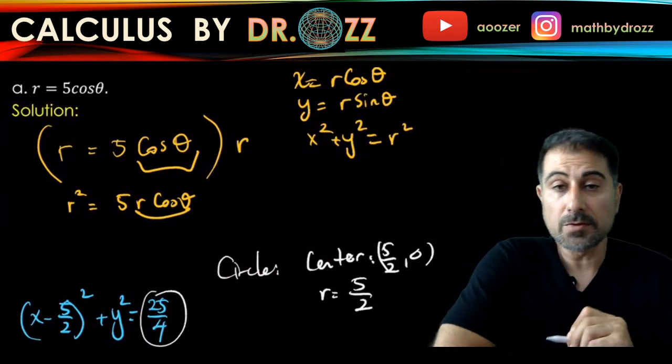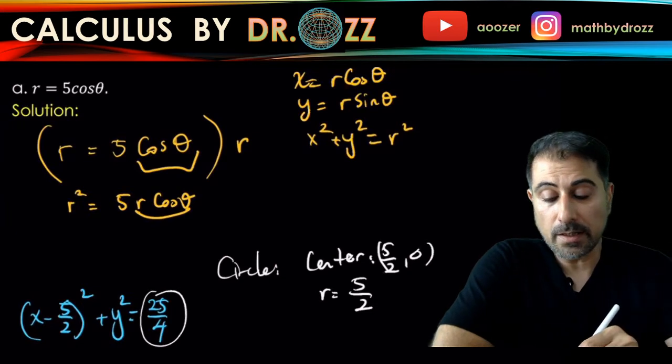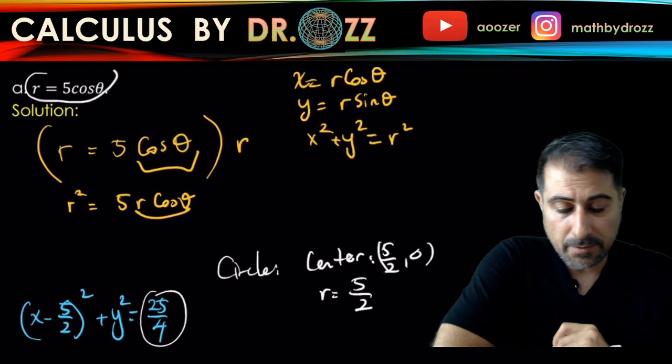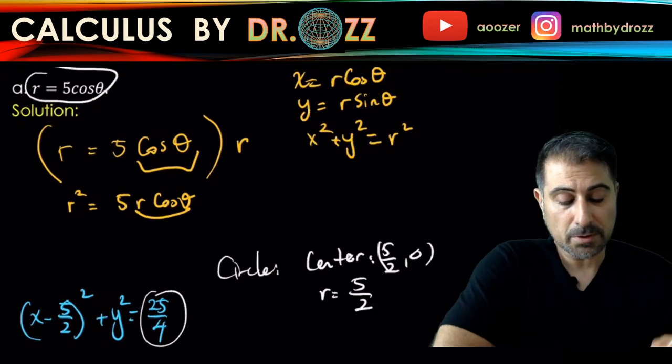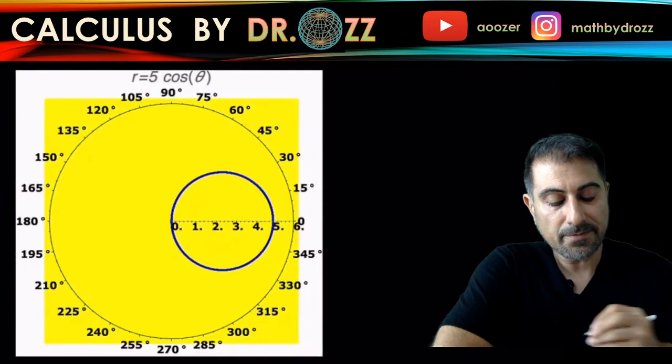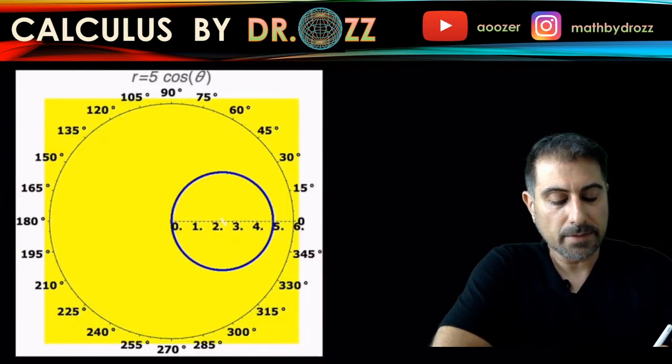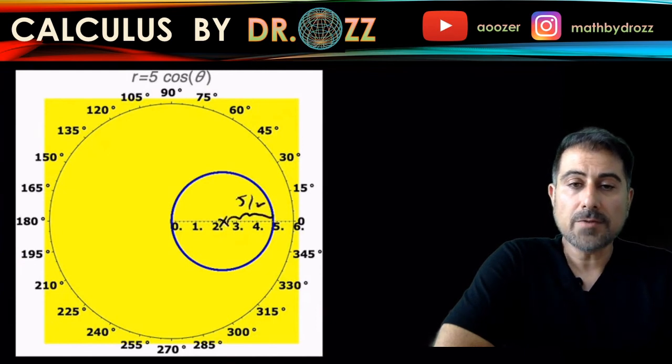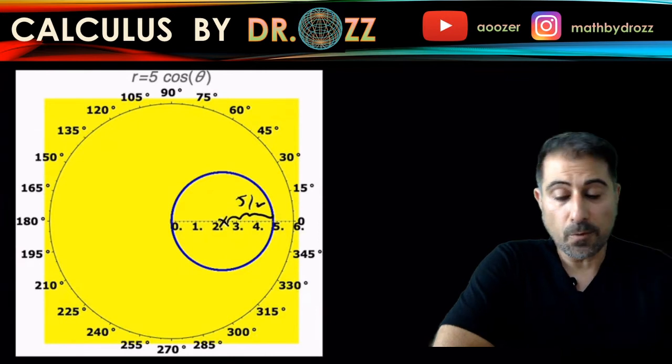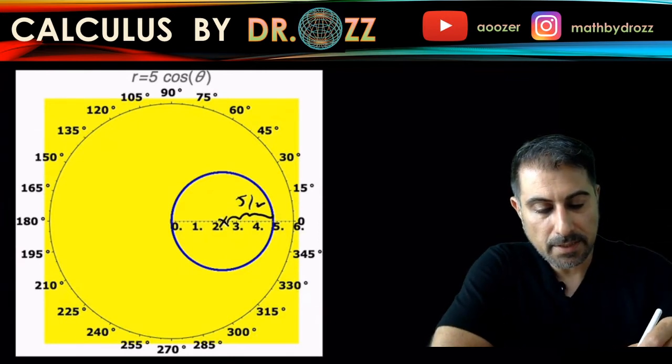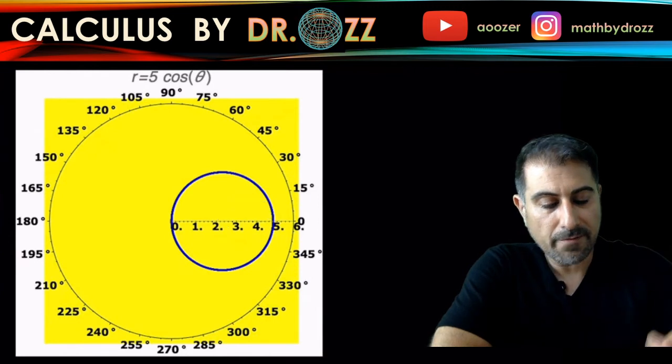But what I want you to do is also do this in the polar form, like graphing r equals five cosine theta. So let me just show you how that works. So here's my circle centered at five halves here. Five halves with the radius five halves as well. And how do you get this graph if you want to graph it in the polar form?